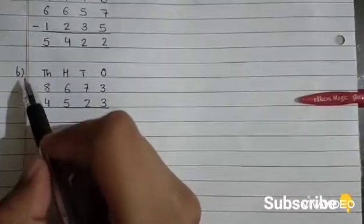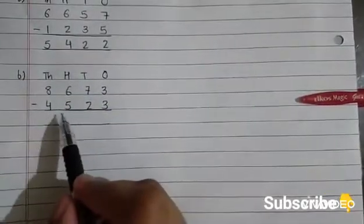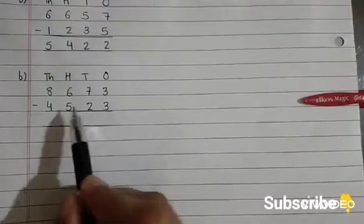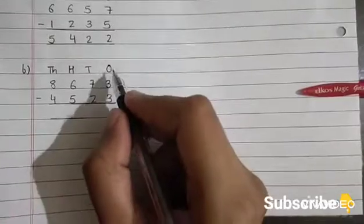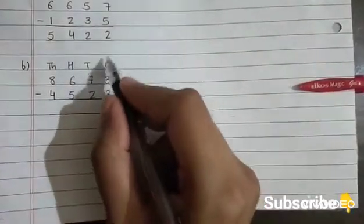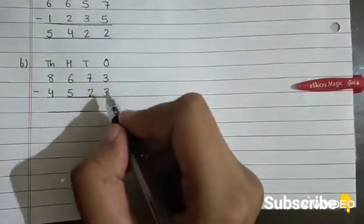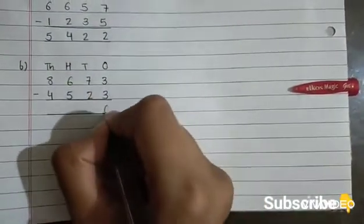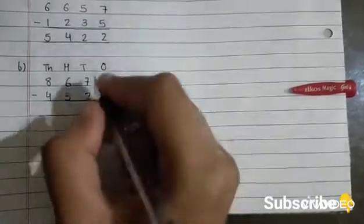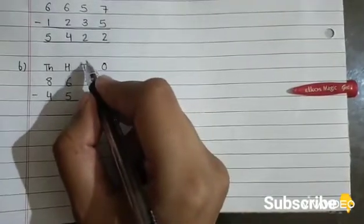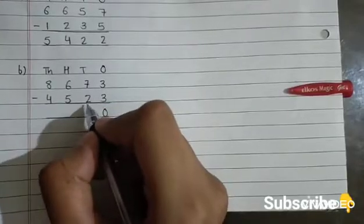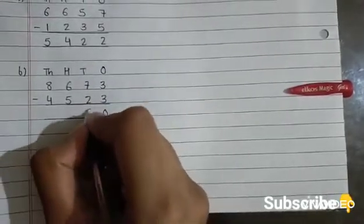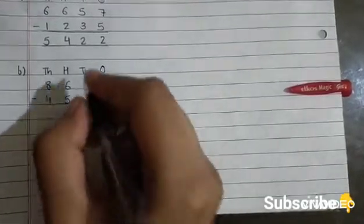Let us solve one more question. Let us subtract 4523 from 8673. First, we will subtract the number given at the 1's place, that is 3 - 3 equals 0. Now, we will subtract the number given at the 10's place, that is 7 - 2 equals 5.